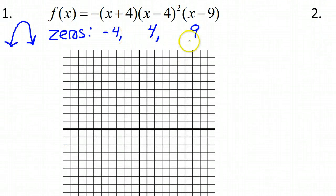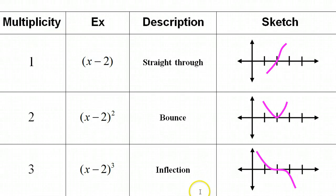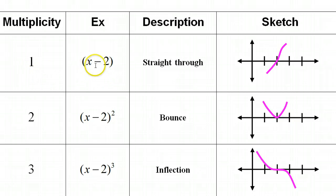Let me zoom in. That means these are the values at which the x-intercepts will occur: negative 4, positive 4, and 9. These are the three zeros. Now here's the other thing you need to know. The behavior at the graph when it touches the x-intercept is going to depend on the multiplicity of that particular factor. When I say multiplicity — is there just one of them? Is there two of them? Is there three of them? That's multiplicity.